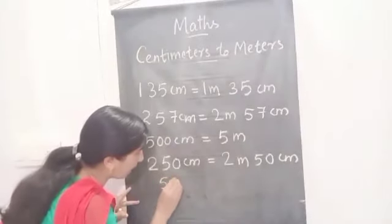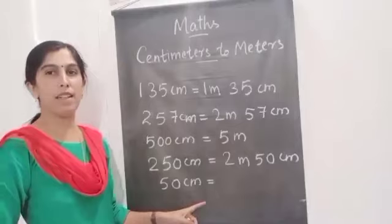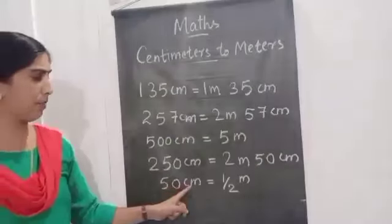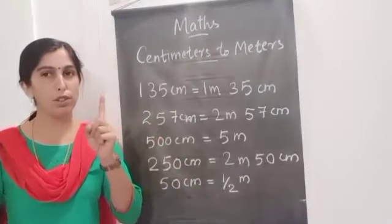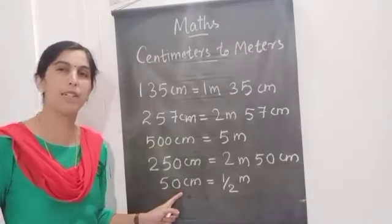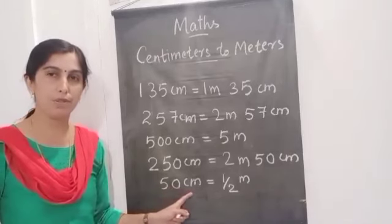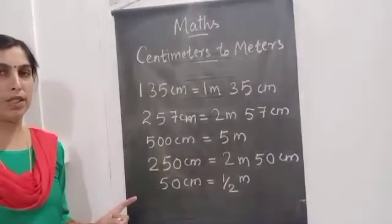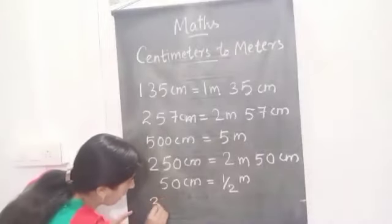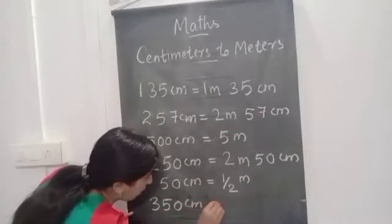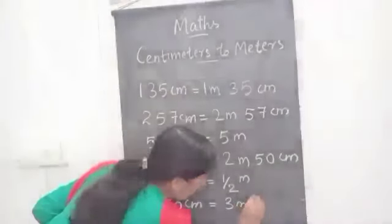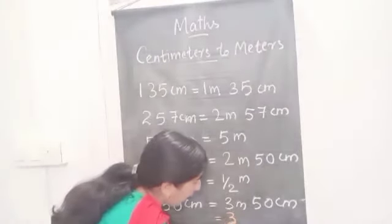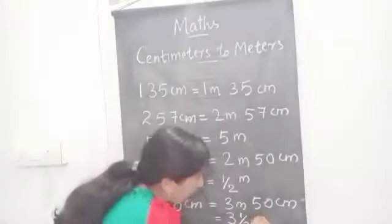Fifty centimeters — we can write as half meter. See, 100 centimeters is equal to one meter. So half of one hundred is fifty. So fifty centimeters is equal to half meter. So if it is 350 centimeters, you can write three meters and fifty centimeters, or you can say three and a half meters.